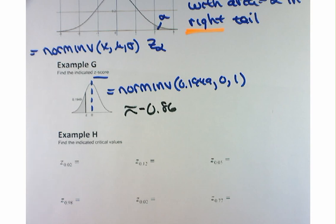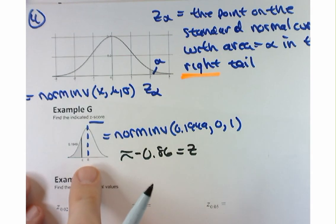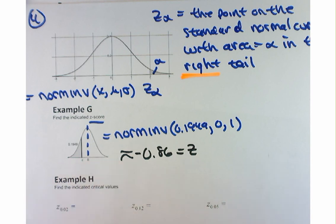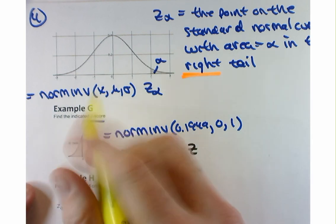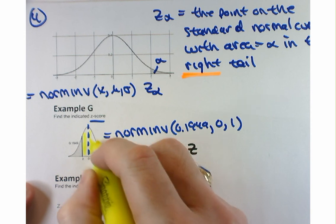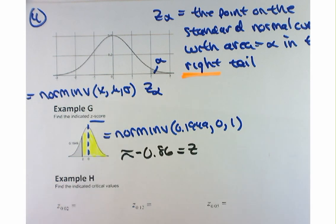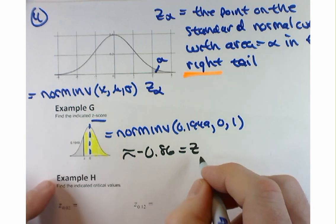If you wanted to write it with Z notation, keep in mind that it's really the area in the right tail. So if 0.1949 is in the left tail, how much is in the right tail? It'd be 1 minus that, right? So that would be Z sub 0.8051 — that's what that would be.